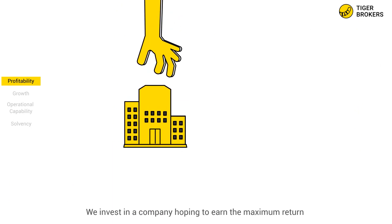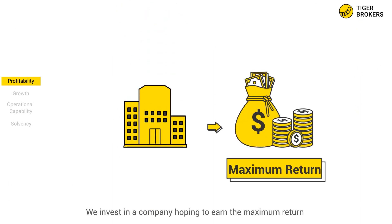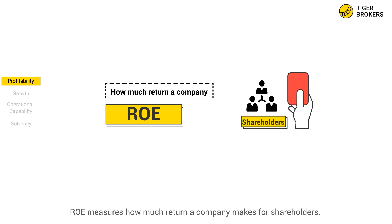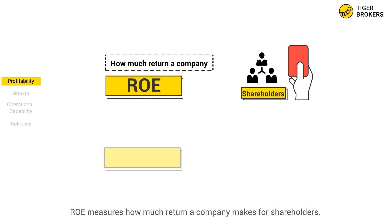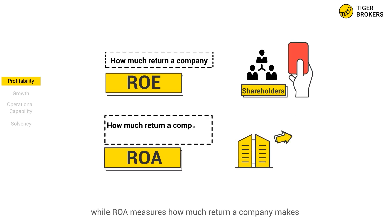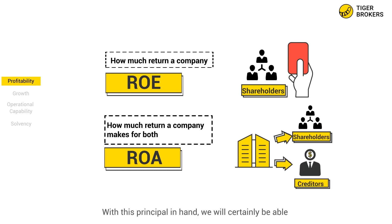We invest in the company hoping to earn the maximum return. ROE measures how much return the company makes for shareholders, while ROA measures how much return the company makes for both its shareholders and creditors. With this principle in hand, we will certainly be able to assess the profitability of a company.